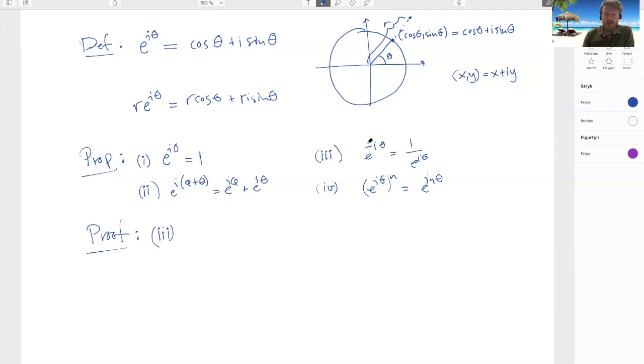So we want to show that if we put minus i theta up here, it's the same as if we had one over e^(i theta). So now let's do it like, we're going to prove this by a chain of equalities. And let's start out with this side here, and then try to simplify. So by the definition, this is exactly this thing.